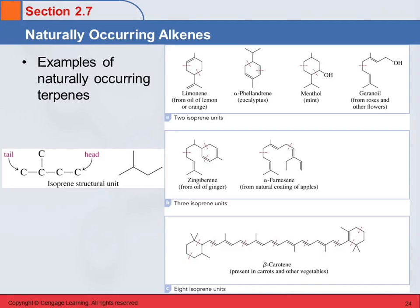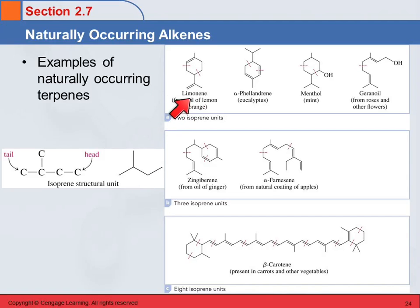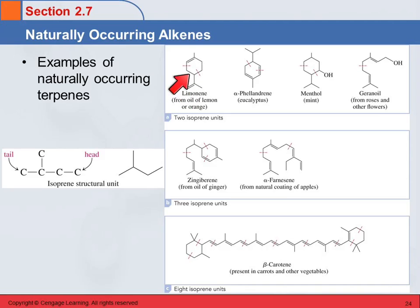Here are some examples. What happens is that the isoprene unit had a double bond on each end, and when they join together, that double bond goes away. Here we have limonene, which is the smell of lemon or oranges. The red lines show one isoprene unit here and another one here, connected together.